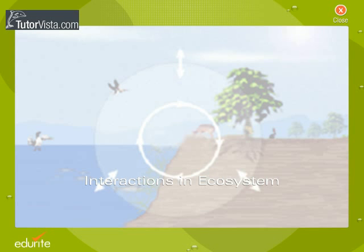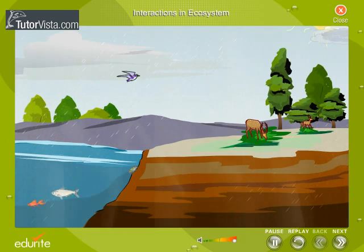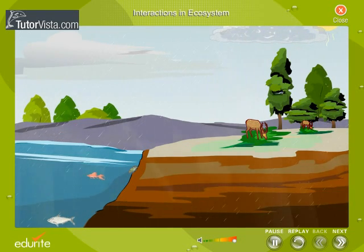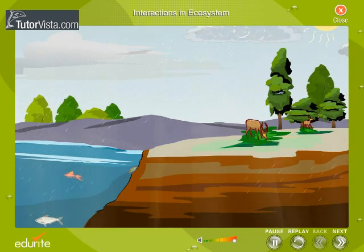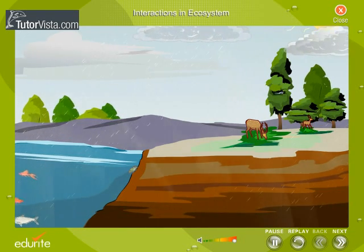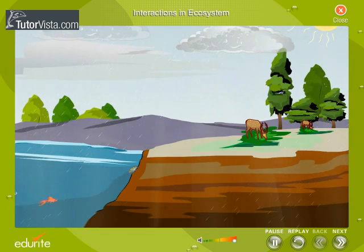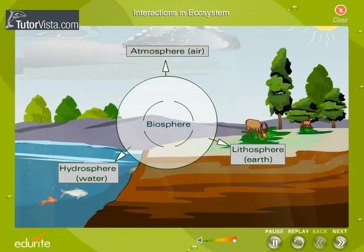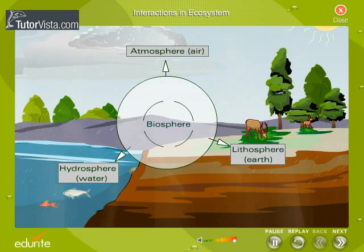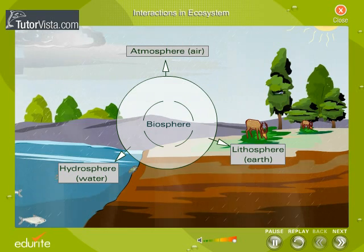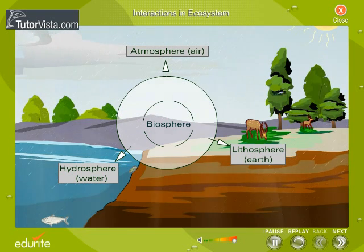Interactions in Ecosystem. You are probably aware that the biosphere is a complex mechanism. Have you ever wondered what makes it complex and dynamic, yet at the same time stable too? It is the interaction between various components of the biosphere. We will now be discussing these interactions in the biosphere.